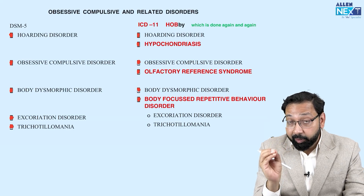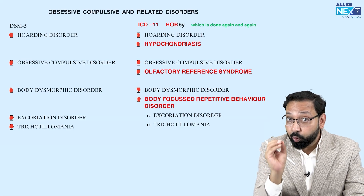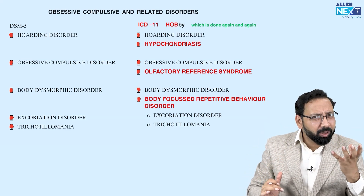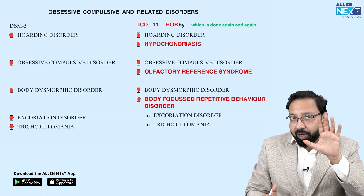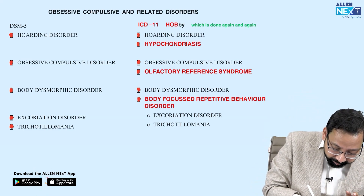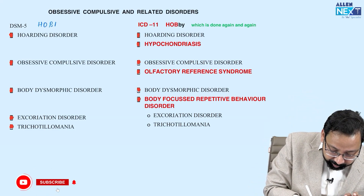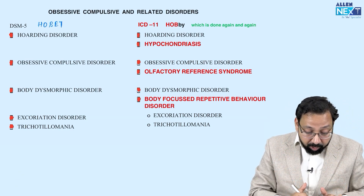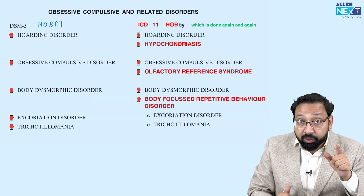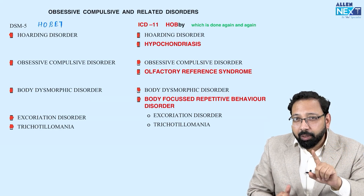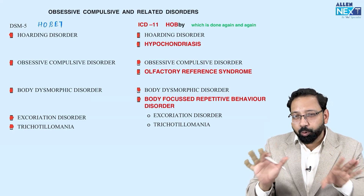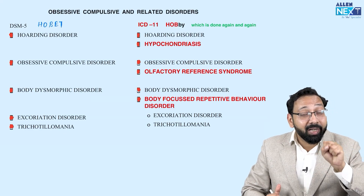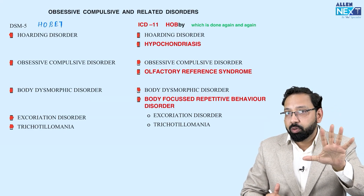Obsessive compulsive and related disorders is a very important topic. In this group, multiple disorders are present. As per DSM-5, there are five disorders. The mnemonic is HOBET: H for hoarding disorder, O for obsessive compulsive disorder, B for body dysmorphic disorder, E for excoriation disorder, T for trichotillomania.